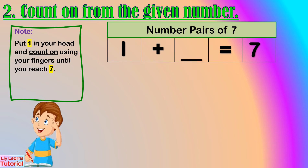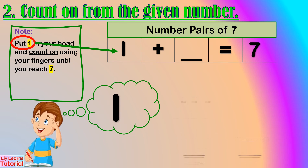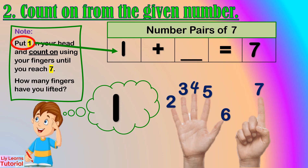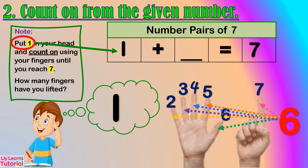Same step. Let's start from 1. Hold 1 in your head, then count up: 2, 3, 4, 5, 6, 7. How many fingers have you lifted? 6 fingers. So, the number pair of 1 is 6. Now, we start from 2. Hold 2 in your head, then count up: 3, 4, 5, 6, 7. How many fingers have you lifted? 5 fingers. So, the number pair of 2 is 5.